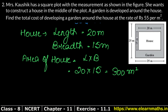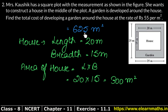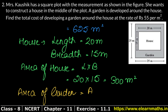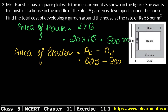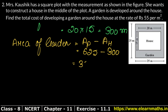Now we know the area of the house and the plot area. We can easily find the garden area. Area of garden = Area of plot − Area of house. The plot area was 625 and the house area was 300, so the garden area is 625 − 300 = 325 square meters.